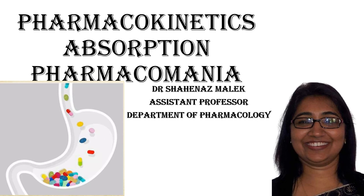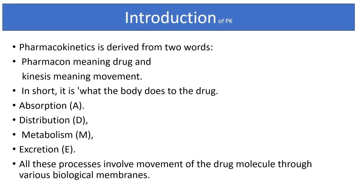Hello and welcome back to Pharmacomania. I'm Dr. Shahnaz Malik. Today we cover one of the parameters of pharmacokinetics: absorption. Pharmacokinetics is derived from two words — pharmacon meaning drug, and kinesis meaning movement of the drug. In short, it is what the body does to the drug. There are four parameters: absorption, distribution, metabolism, and excretion. All these processes involve movement of the drug molecule through various biological membranes.